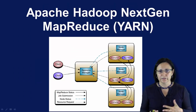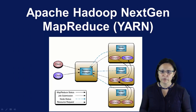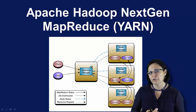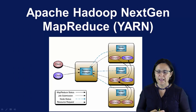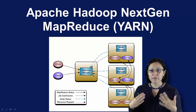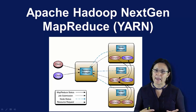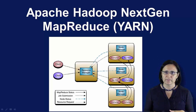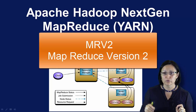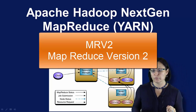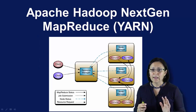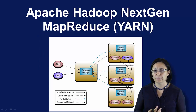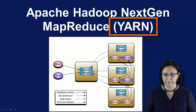MapReduce has gone through a complete overhaul in the Hadoop 0.23 version. Ever since, we started talking about MapReduce 2.0 — oftentimes you're going to see MRV2 for MapReduce version 2. This has then kind of turned into a new name called YARN.